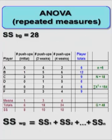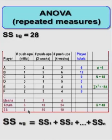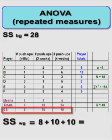Now let's do the within groups. Just like the old way, you just get the sum of squares from each one of the groups and add them up. So it's going to be 8 plus 10 plus 10, and that looks like 28 as well.